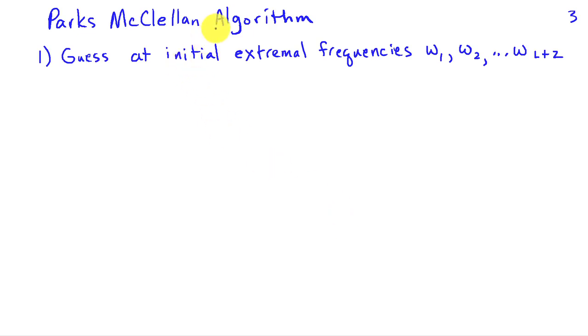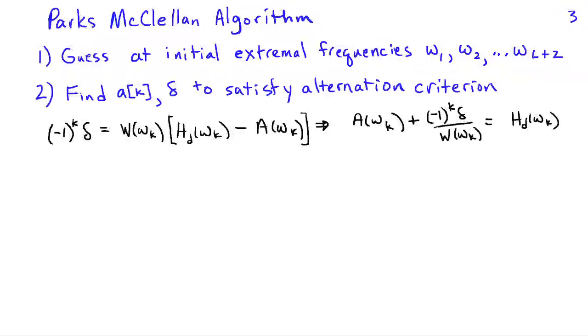There are several different algorithms that can accomplish this. The most commonly used one is the Parks-McClellan algorithm. And it involves guessing at the initial extremal frequencies, omega 1 through omega L plus 2. Then we're going to find an AK set of coefficients and an error term delta that satisfies the alternation criterion. That is negative 1 to the K. That's going to give us alternating signs in the error.